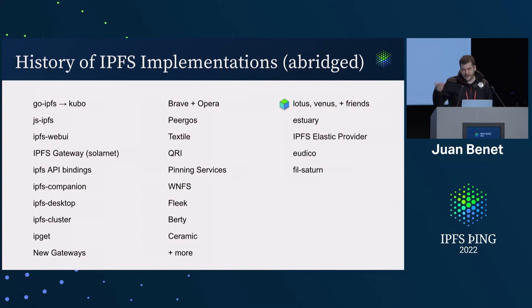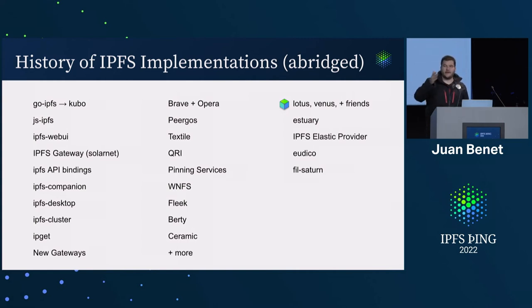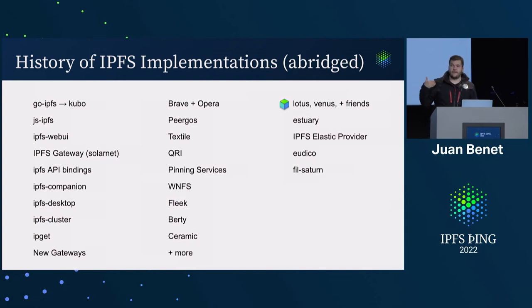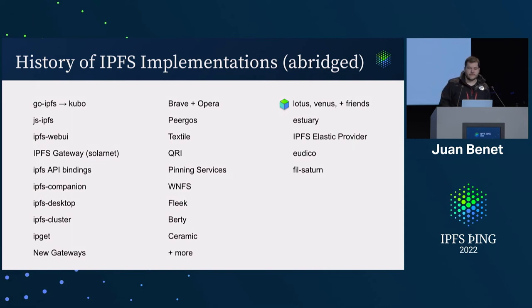So we got Lotus and Venus and friends. Then Estuary came as a way to bridge the gap, because Lotus and friends ended up so far away from Kubo that interop seemed extremely difficult — even today they don't quite interop, which is the bane of our existence. We're getting things like Estuary to help bridge those gaps, and both Kubo and Lotus are getting closer and closer to each other. Along the way we also got things like IPFS Elastic Provider, a new implementation of an IPFS system for large cloud systems.